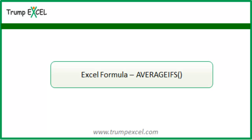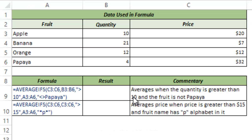Hello and welcome to the video by TrumpExcel. I am Sumit Bansal and in this video I will show you how to use the AVERAGEIFS function in Excel. AVERAGEIFS is a statistical function that can be used when you have to average values when given conditions are met. A related function is AVERAGEIF, but that can be used when you only have one condition. If you have more than one condition, then you should use AVERAGEIFS.